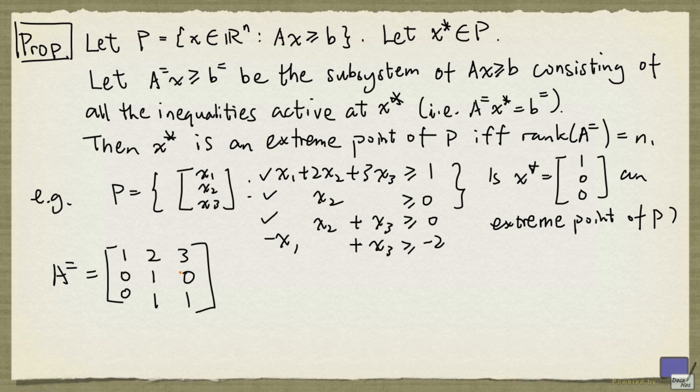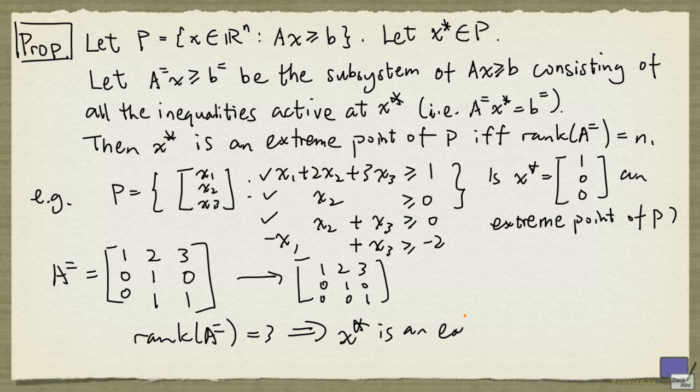we want to compute the rank of this. Now if we take -1 times the second row added to the third row, we get the row equivalent of the matrix 1, 2, 3, 0, 1, 0, and 0, 0, 1. And clearly this matrix has rank 3. So the rank of A^= is 3. And that implies that x* is an extreme point of P.